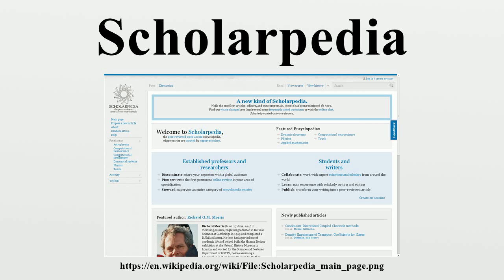Scope. Scholarpedia is not a general encyclopedia. It focuses on the fields of computational neuroscience, touch, dynamical systems, computational intelligence, physics and astrophysics. In April 2009, Scholarpedia amounted to 500 peer-reviewed accepted articles and about 1,400 articles at diverse stages of completion.